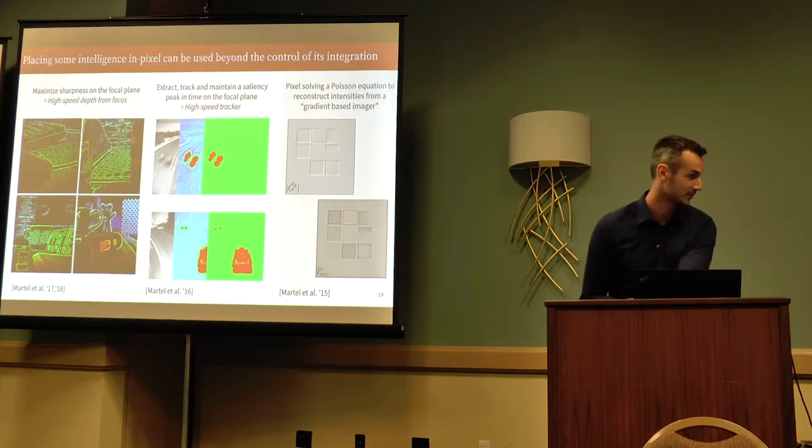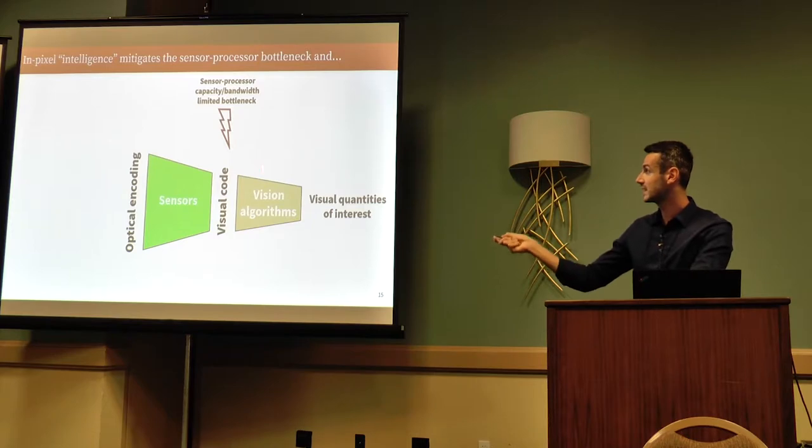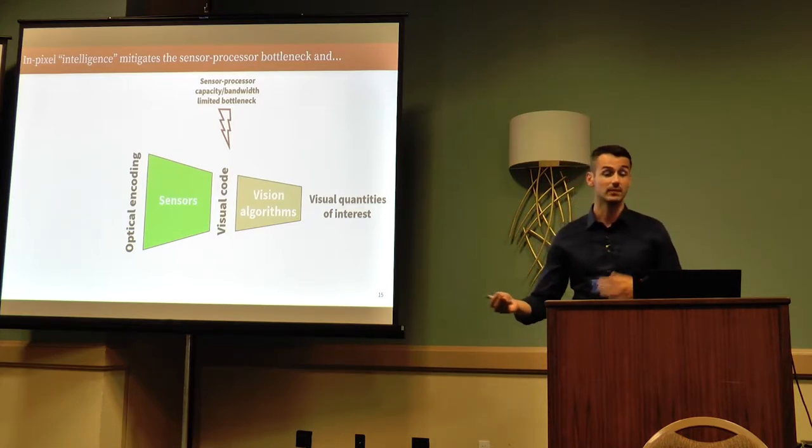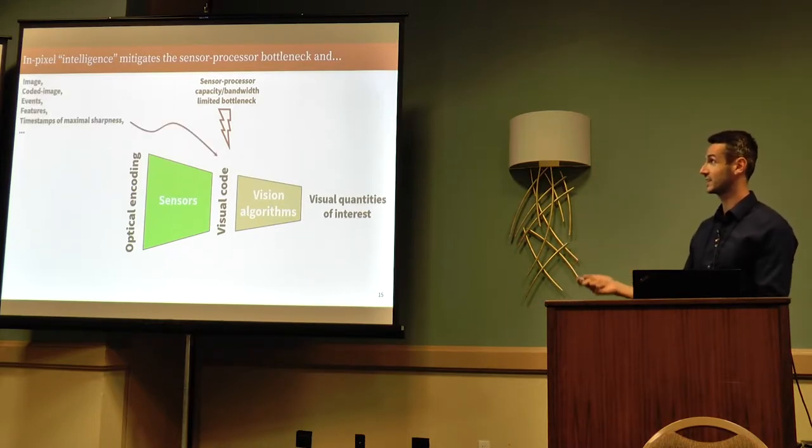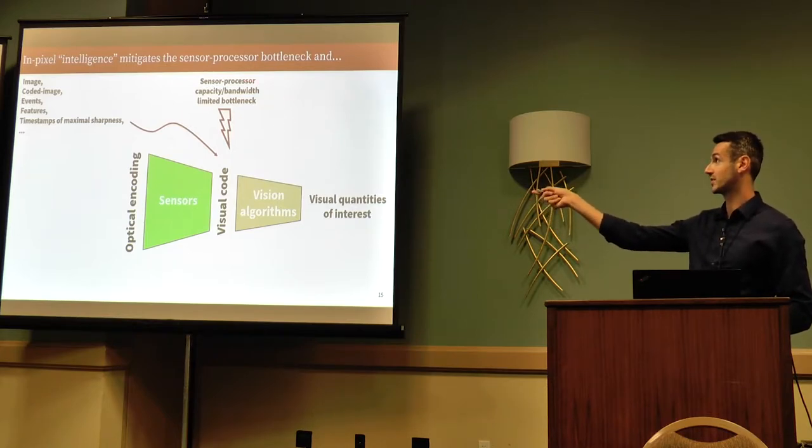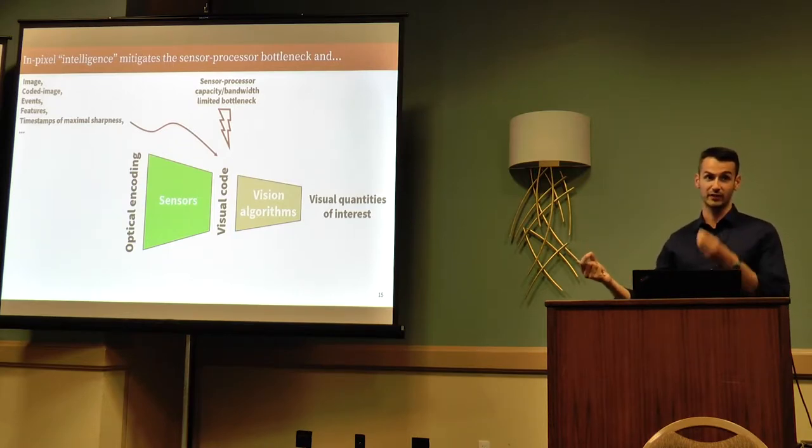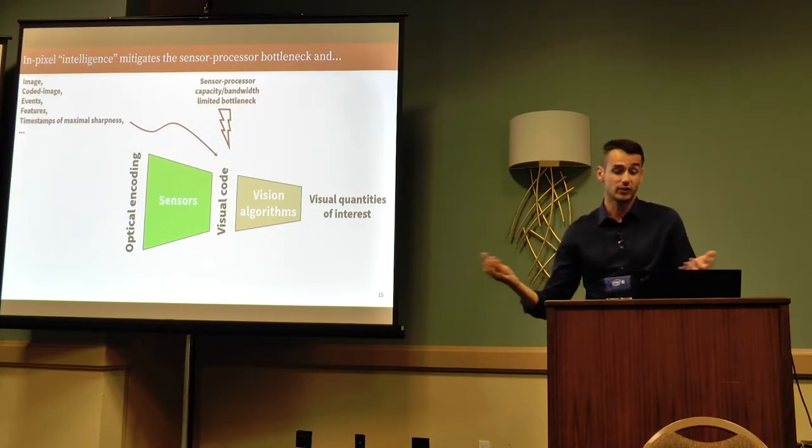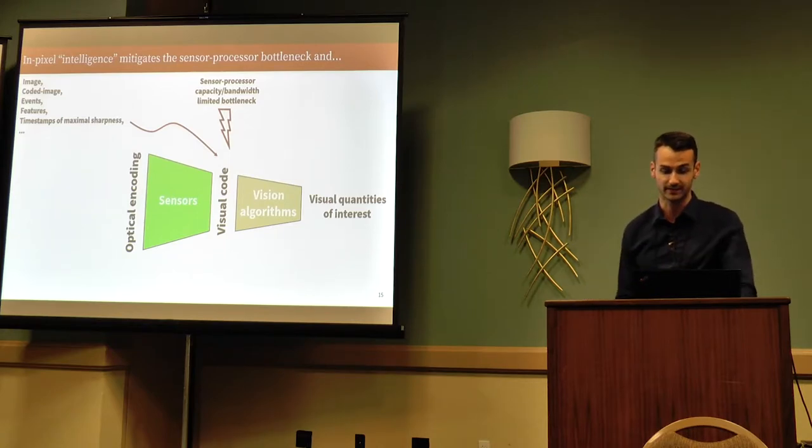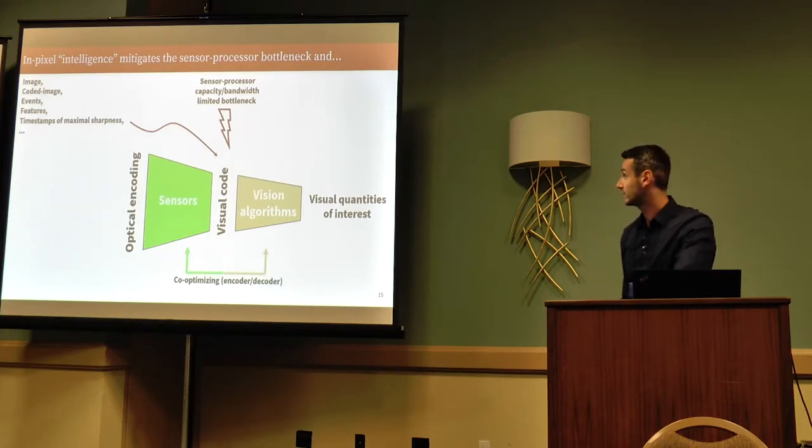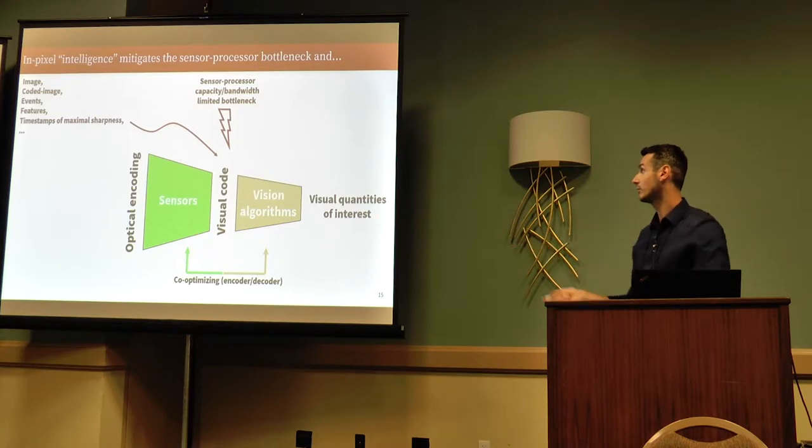We are in this situation. We have sensors, vision algorithm, and all sensors we see could actually provide different visual codes, events, images, coded images. And we showed that a nice product of having intelligence in the pixel is that we alleviate the sensor-processor bottleneck. You could call it channel-capacity limitation. There's that much information you can transfer from your sensor to your processor. And if you try to do more, it's just not possible.